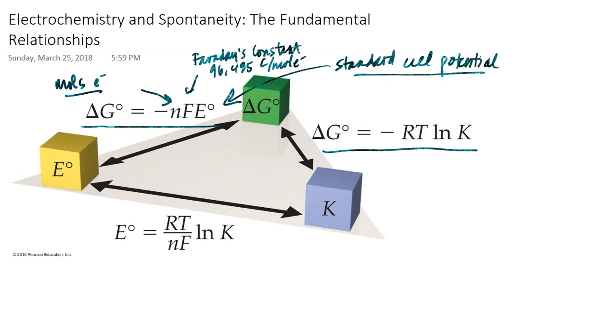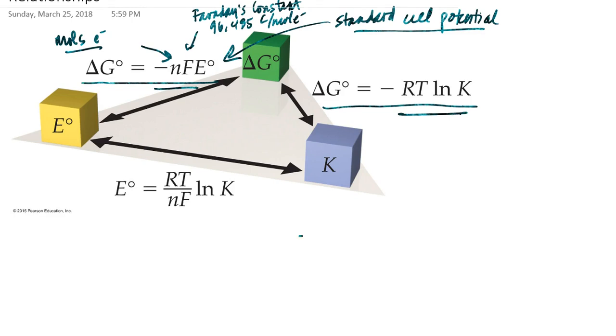Now, because of the transitive property of math, then we can set these two expressions equal to each other. So negative nFE standard is equal to negative RT natural log of K. So that if I solve for E, the negative sign drops out, and I get E standard is equal to RT over nF natural log of K, which is the expression that's shown in the bottom of this triangular diagram. If I wanted to calculate the equilibrium constant for an electrochemical process, then I could do so directly via this particular mathematical relationship.